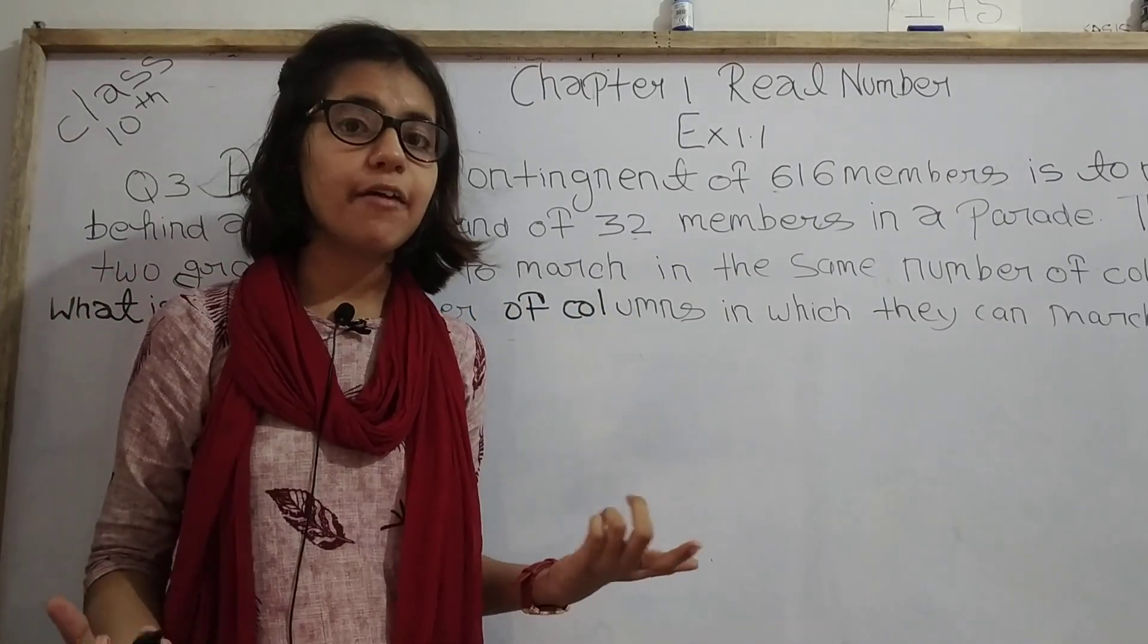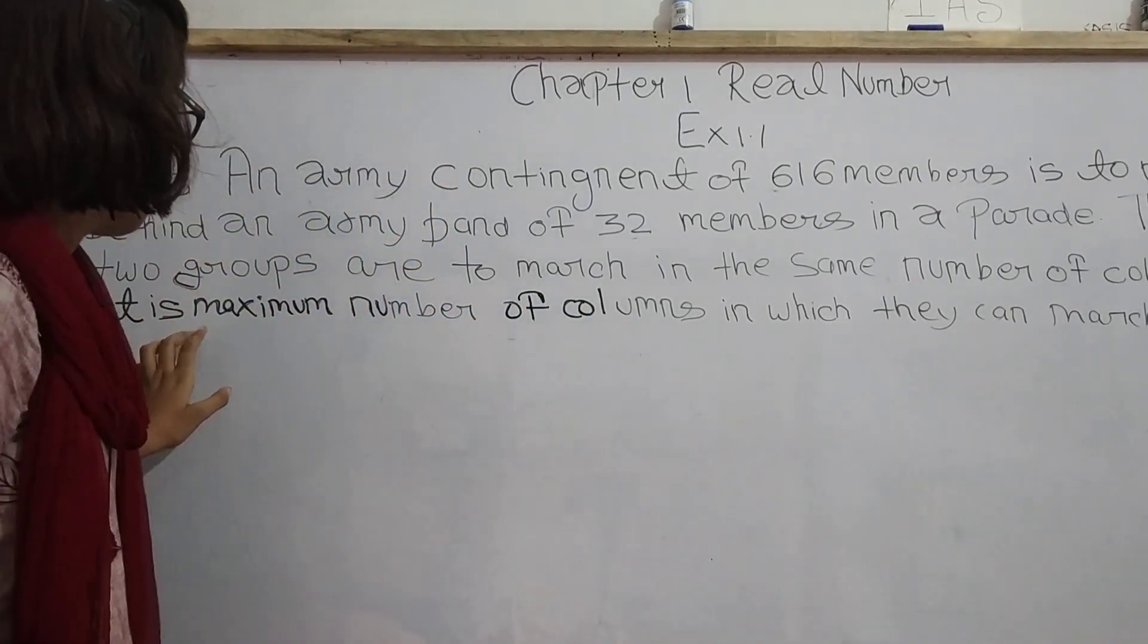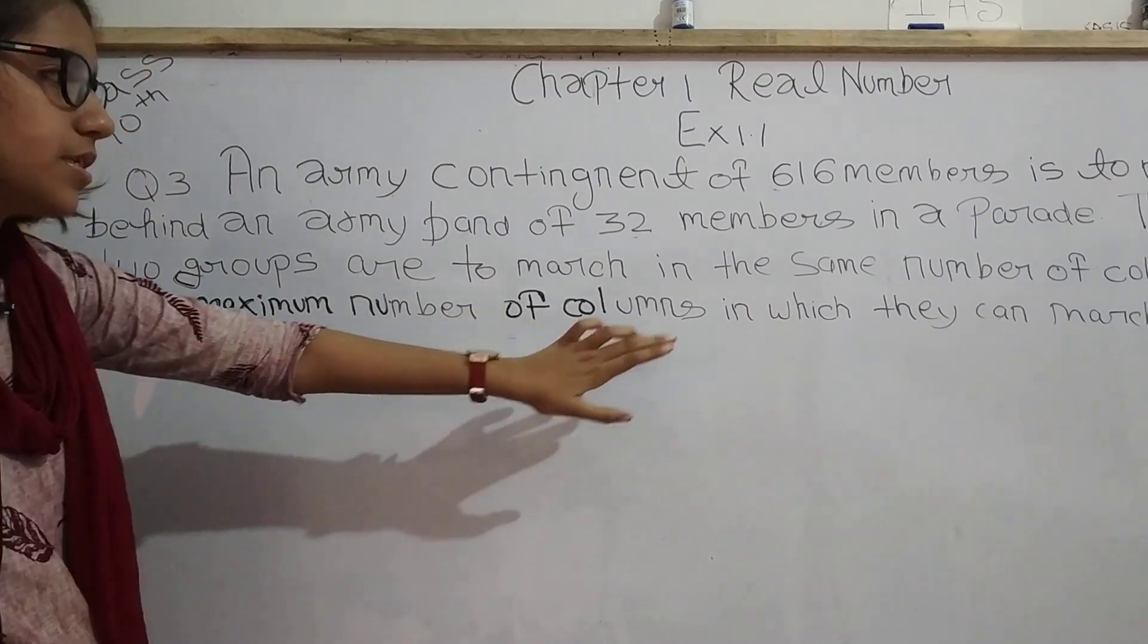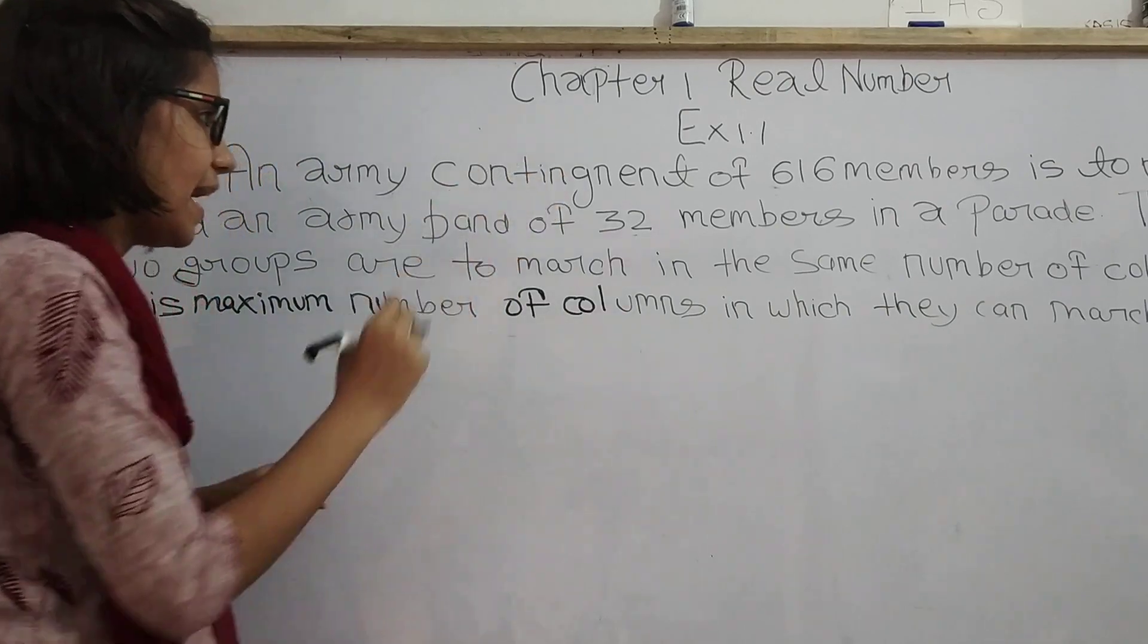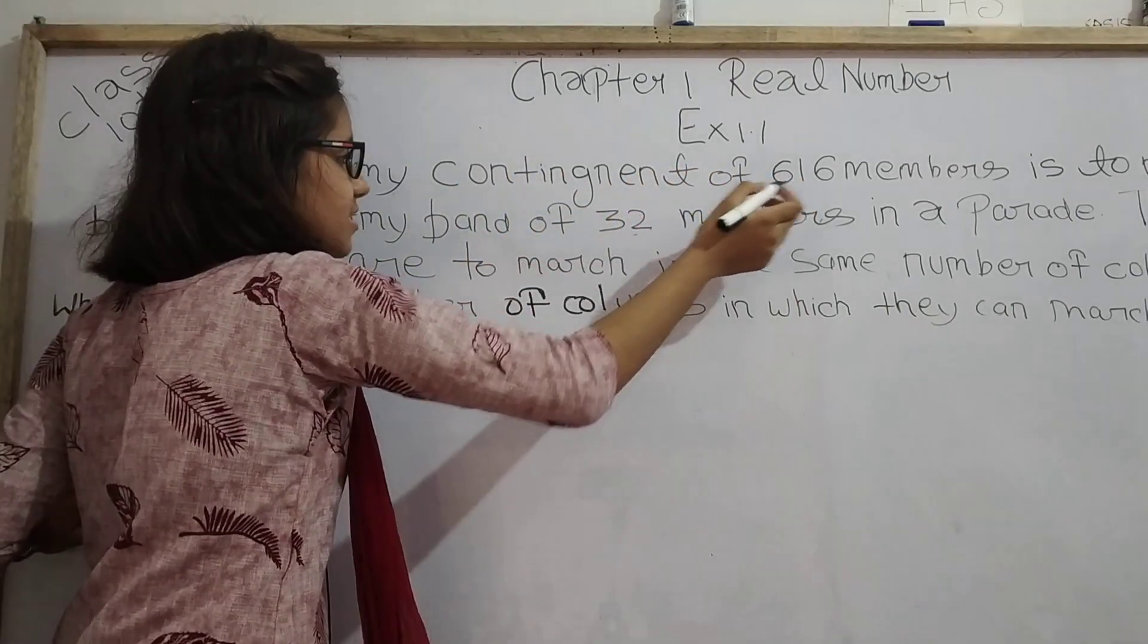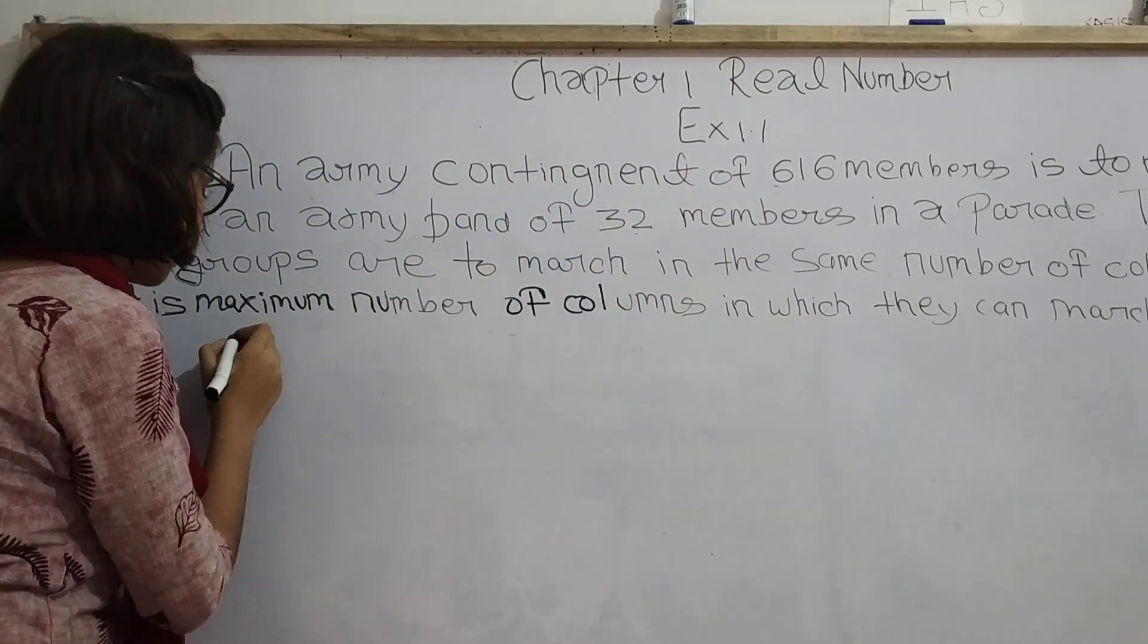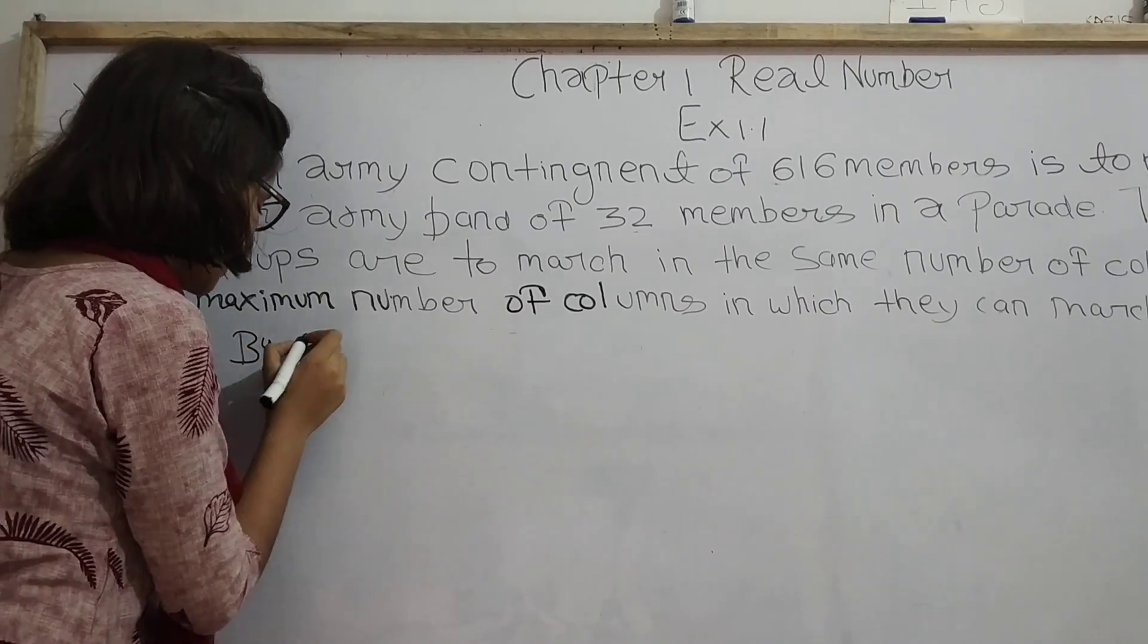What we have to find is the maximum number of columns in which they can march. For solving this type of question, we have to find the HCF of 616 and 32 using Euclid's algorithm.